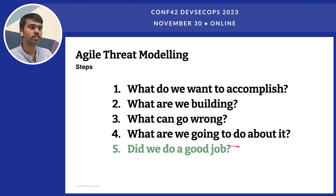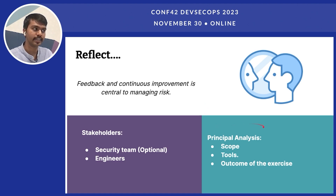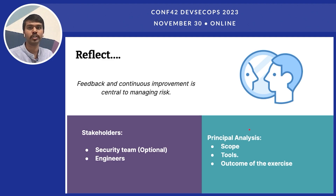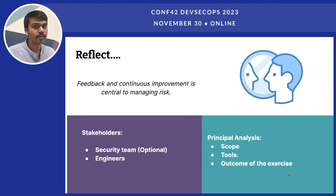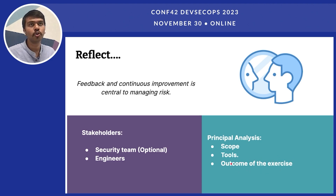Finally, the fifth step: did we do a good job? We reflect on the outcomes of the exercise. Feedback and continuous improvement are central to managing risk — without feedback, we will never improve. Analyze the scope: was it too granular or too big? Analyze the tools used: what about location and remote tools? Analyze the outcome: was a threat discovered a rare find or common? Should we tweak the STRIDE model or the examples given to stakeholders? Depending on the outcomes, you tune and make it better. Stakeholders here are the security team and engineers.